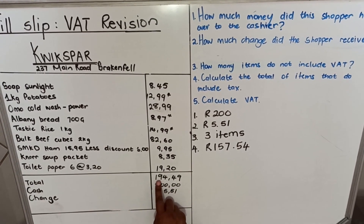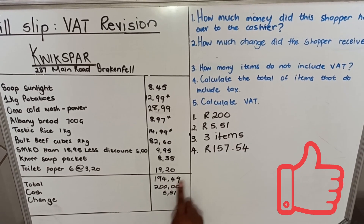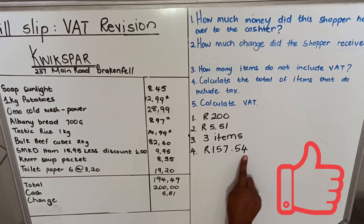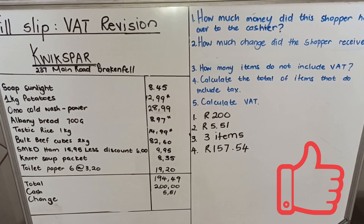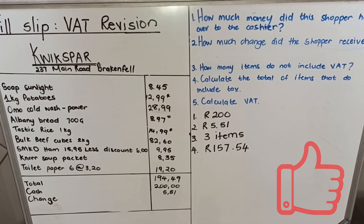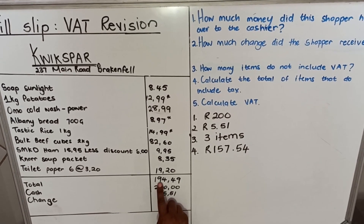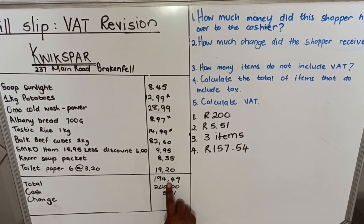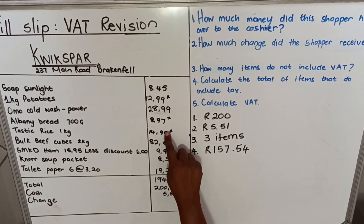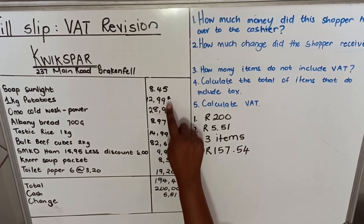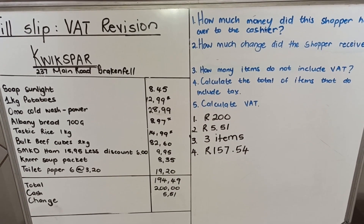So these items, out of the total of 194 rand 49 cents, total 157 rand 54 cents — they did include VAT. There's another way you could have done it: you could have taken 194 rand 49 cents and subtracted the items that don't include VAT, and you would have got the same answer.